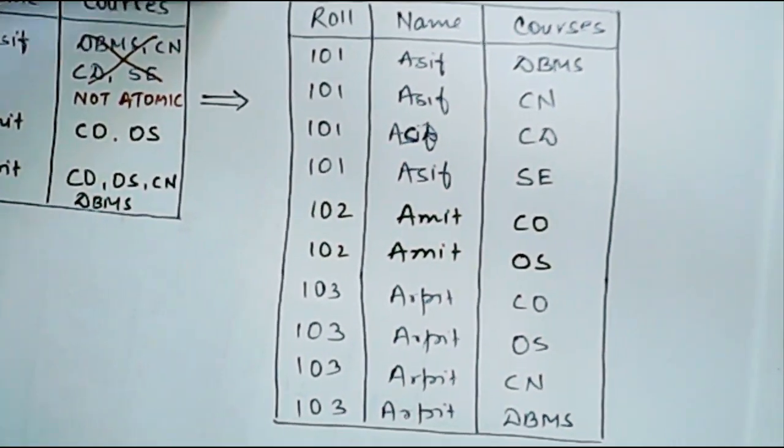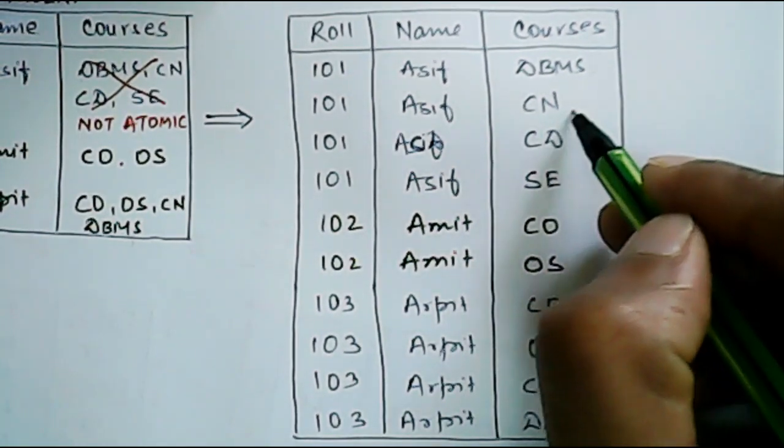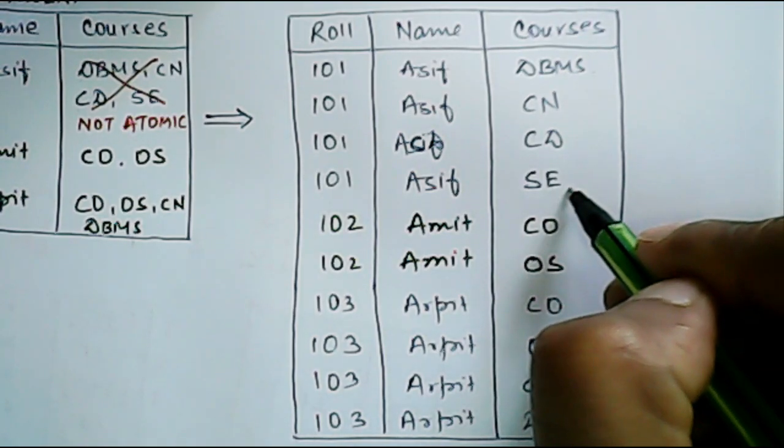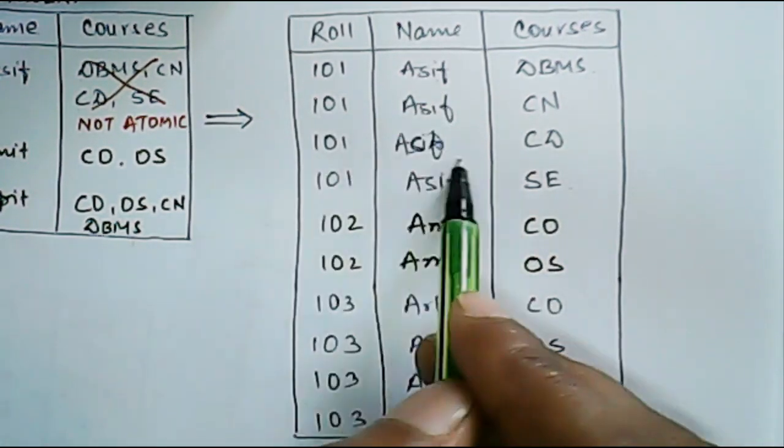Now to make it atomic, we will just repeat these values as DBMS, CN, CD and SE. And all these values will be repeated.